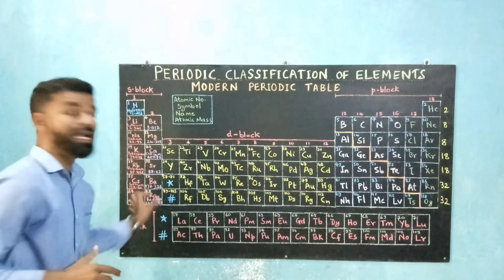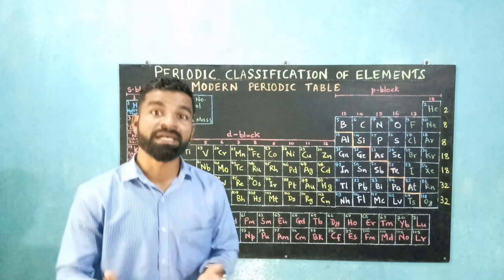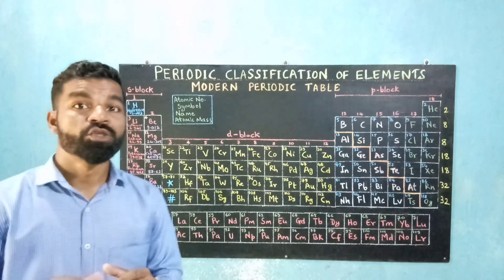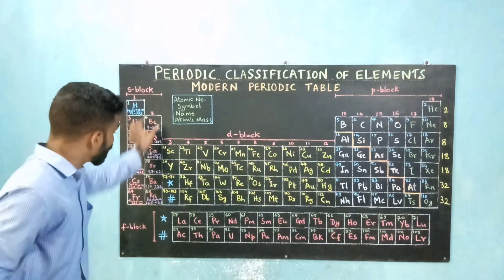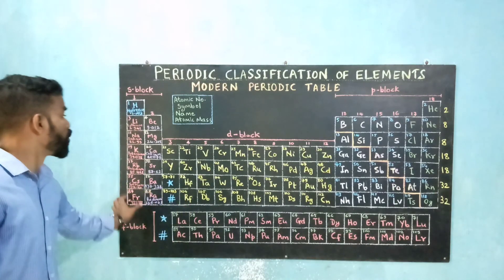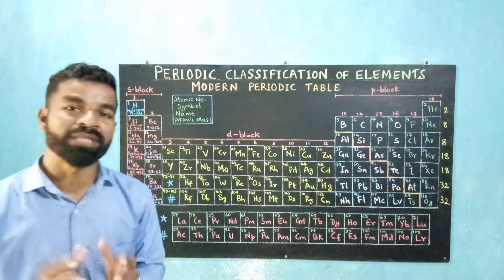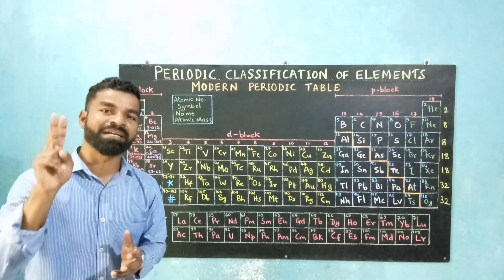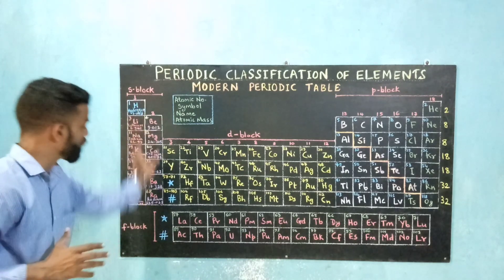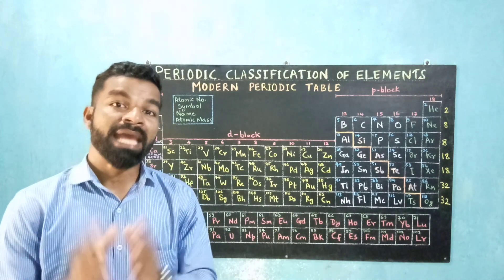Group 2 elements are called alkaline earth metals because when dissolved in water, their oxides are basic in nature — they form weaker alkalis — and they are found in earth's crust. They too show resembling properties, are highly reactive but less reactive than group 1 metals, have high melting and boiling points, and have valency as two — the atoms have two electrons in the outermost shell. All these S block elements of group 1 and group 2 can be easily cut with a knife; on cutting they shine, and they are soft metals.